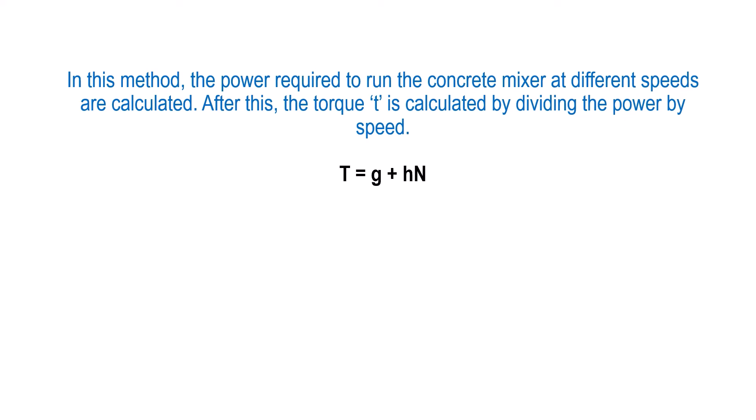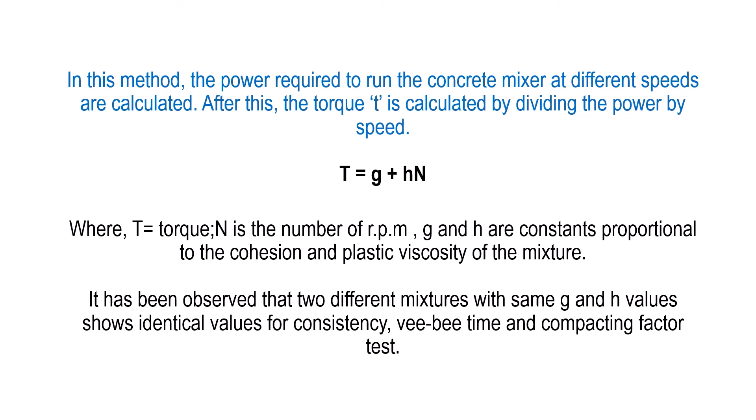Hence, Tattersall provided a relation as torque T = g + hN where N is the number of rpm, T is the torque, g and h are constants proportional to the cohesion and plastic viscosity of the mixture. It has been observed that two different mixtures with same g and h value shows identical value for consistency VB time compacting factor test.